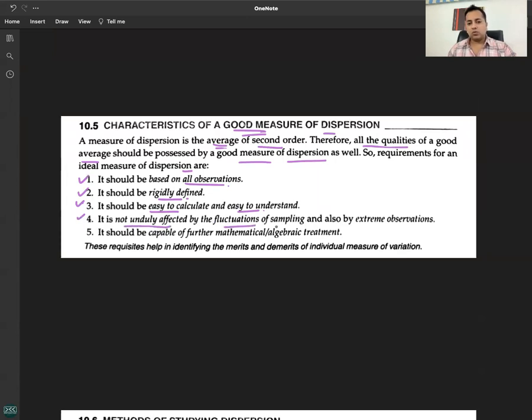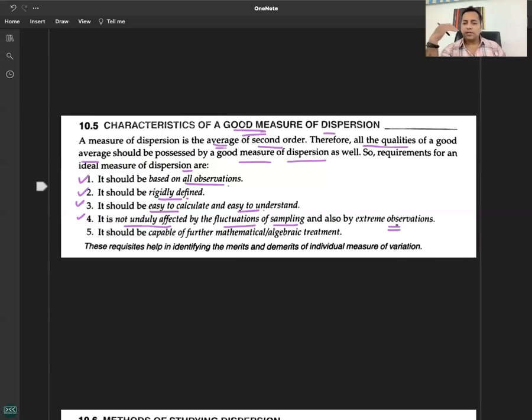Sampling size: 100 to 200 observations of the data. It should be capable of further mathematical or algebraic treatment.